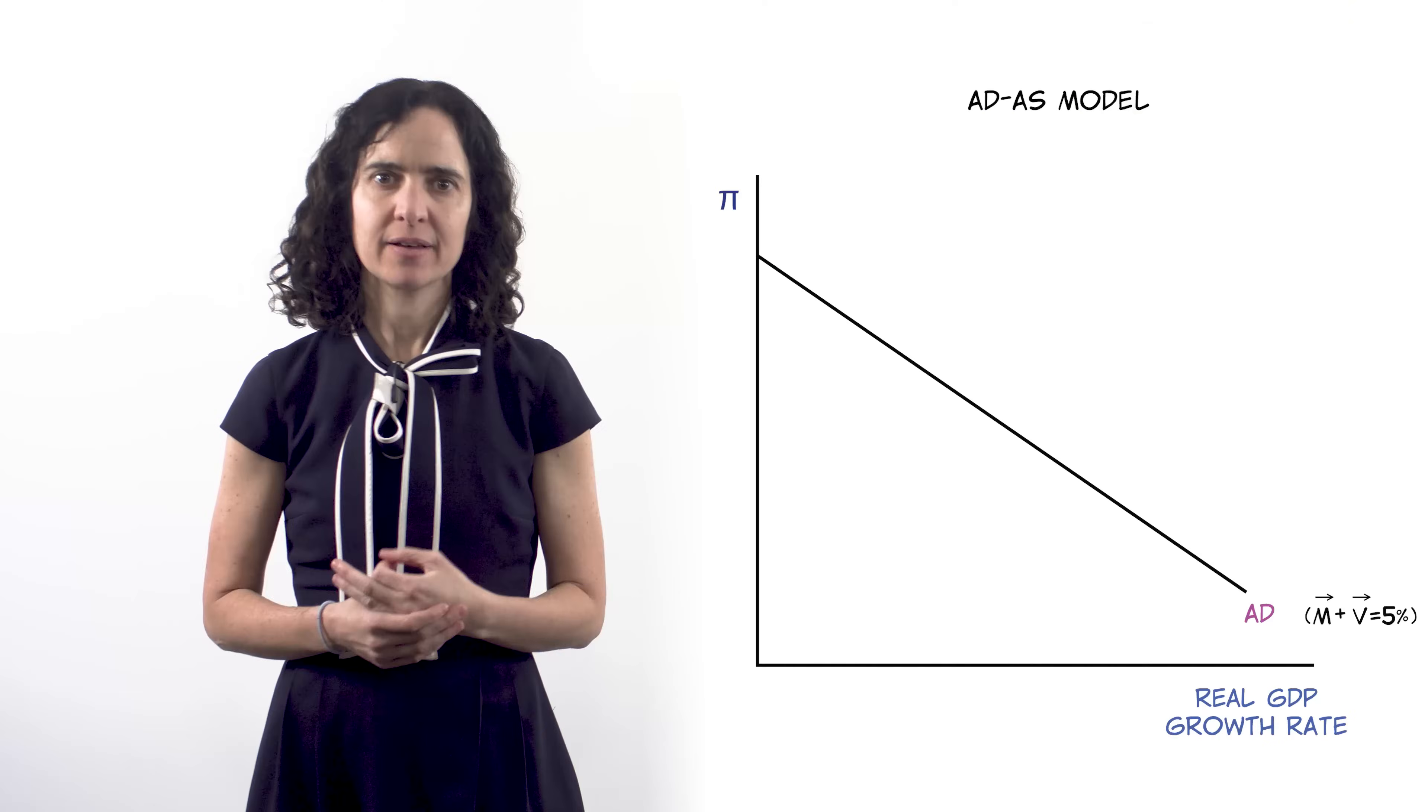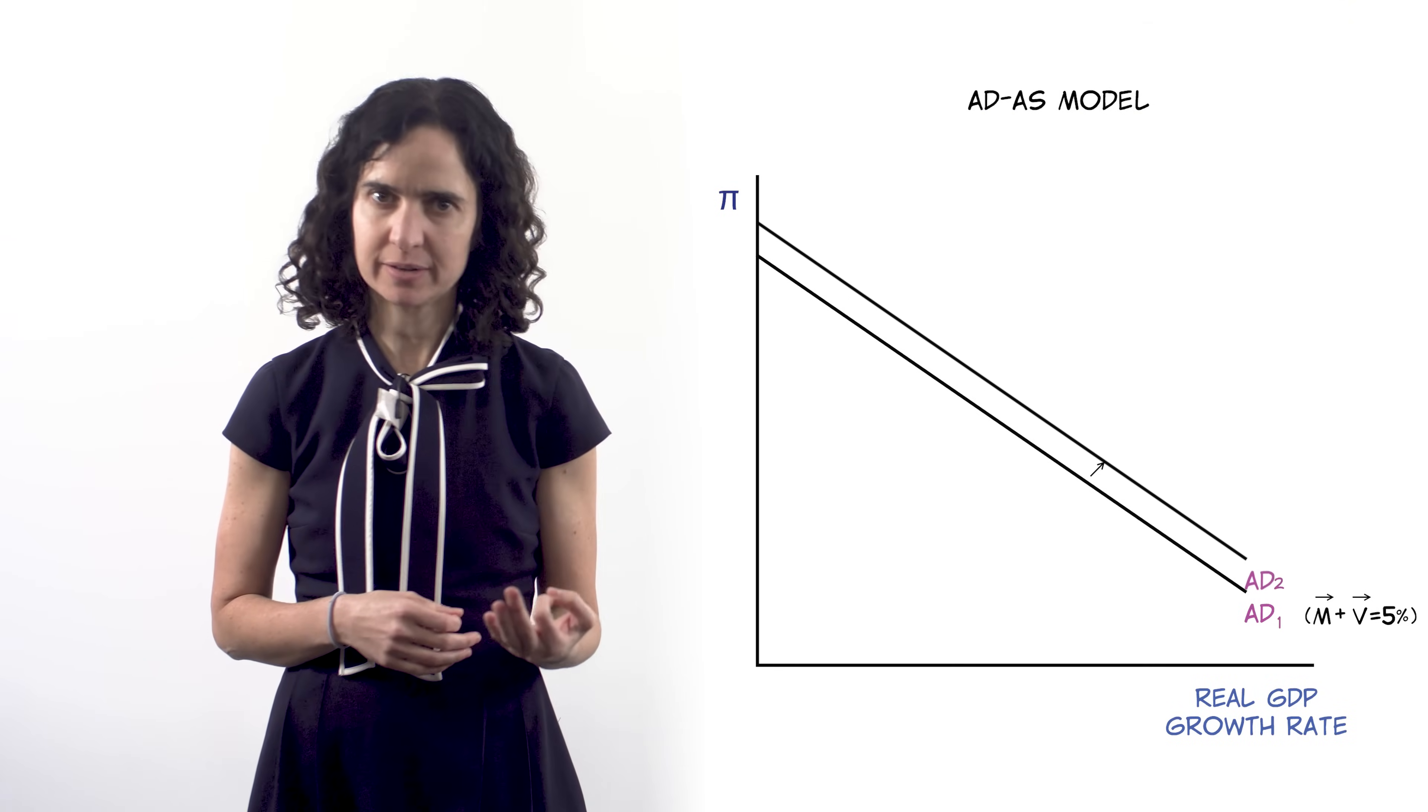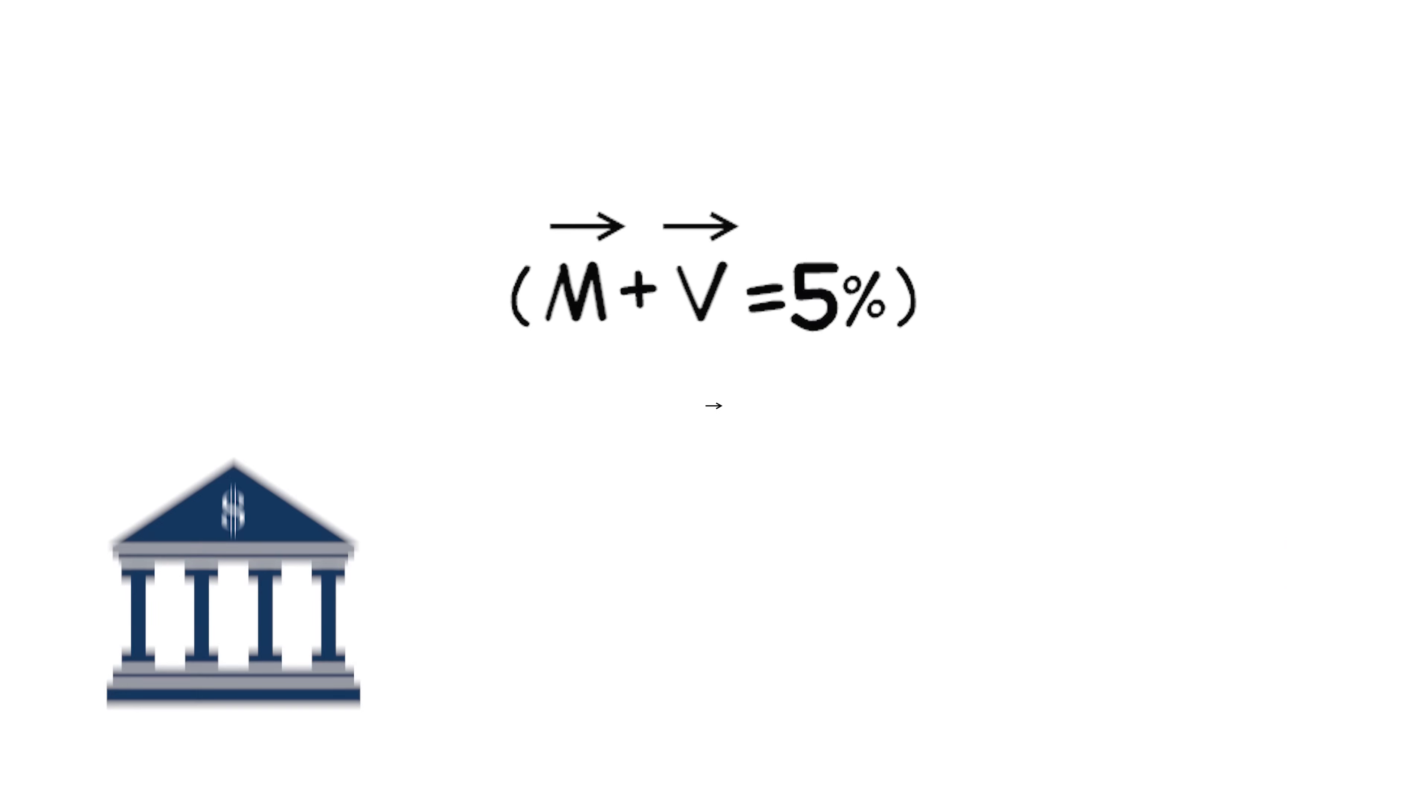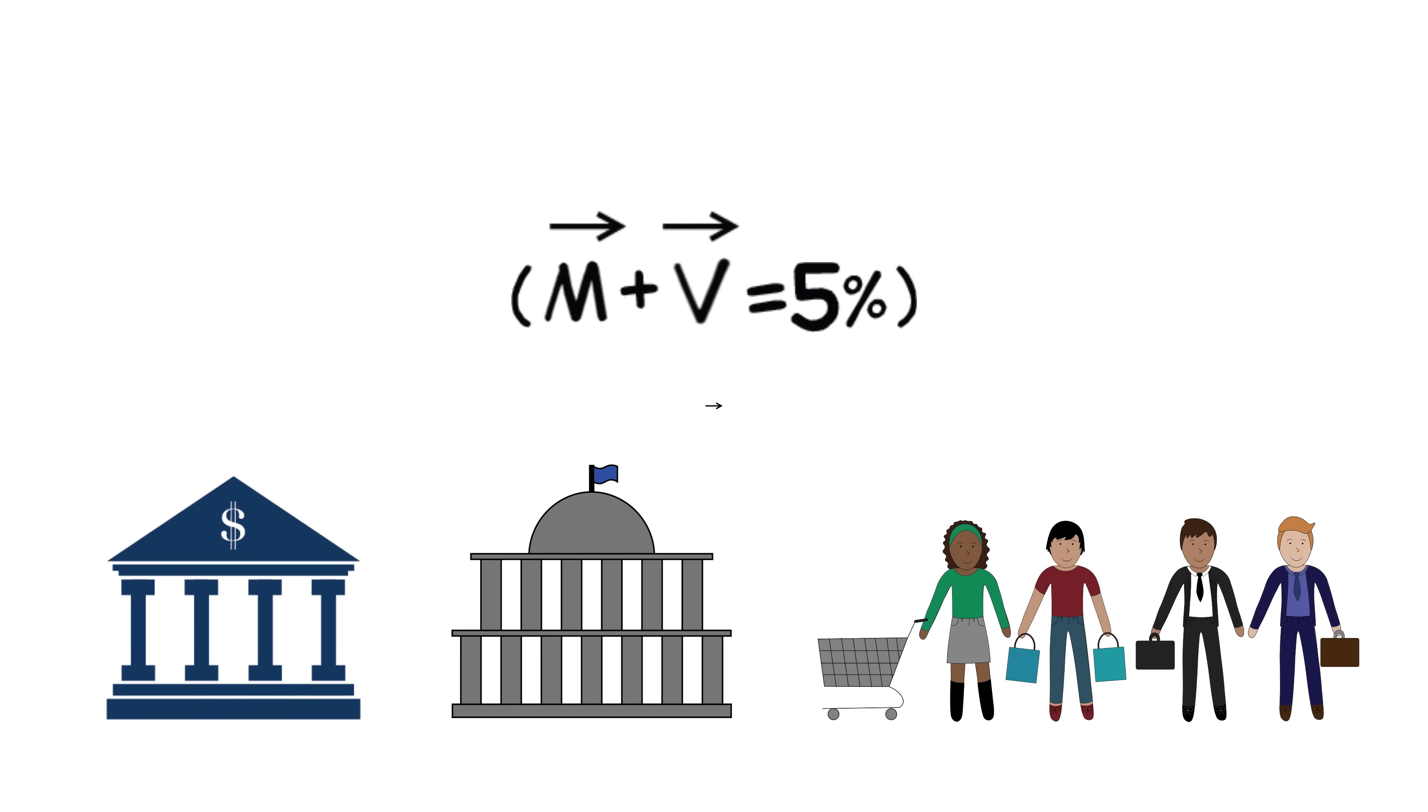So how does the AD curve shift? The AD curve will shift if there's a change in the money growth rate, M, or the change in velocity growth, V. The central bank affects money growth. Government spending and consumer and investor confidence can affect velocity growth.